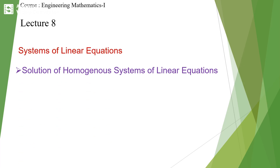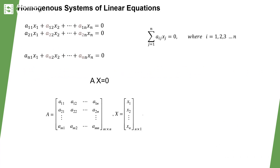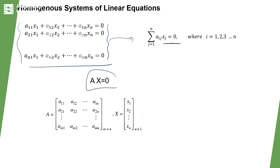This is lecture 8, a continuation of the system of linear equations. In this lecture we discuss the solution of the homogeneous system of linear equations. The homogeneous system is one where the right-hand side is 0. The system is represented as the summation from j=1 to n of a_ij * x_j = 0, or in matrix form as Ax = 0, where A is the coefficient matrix and x is the column vector of unknowns.